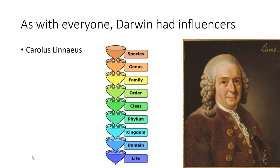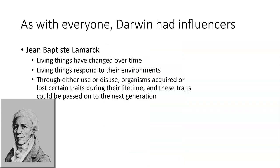Carolus Linnaeus — we already talked about him. He developed nomenclature, binomial nomenclature, the ability to name organisms. You get really specific down to species and really general up at domains. Domain, kingdom, phylum, class, order, family, genus, species. Humans are Homo sapiens — Homo is our genus and sapiens is our species classification.